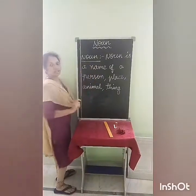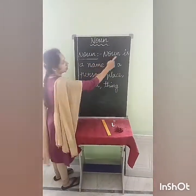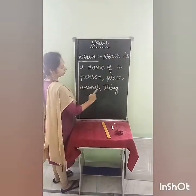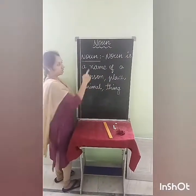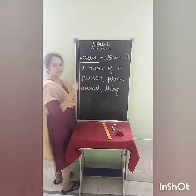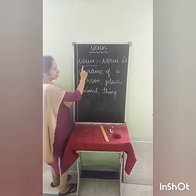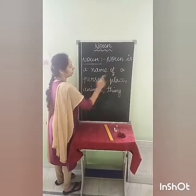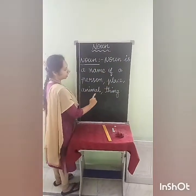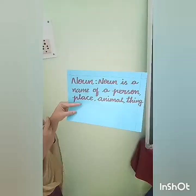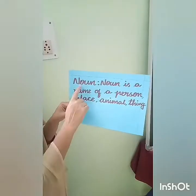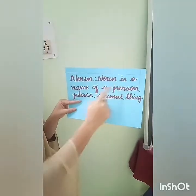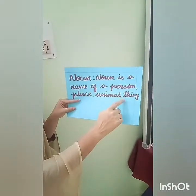So what is the definition of a noun? Noun is a name of a person, place, animal, thing. Read this definition thoroughly. Whenever I ask what is a noun, you have to tell: name of a person, place, animal, thing. See here — noun definition: noun is a name of a person, place, animal, thing.